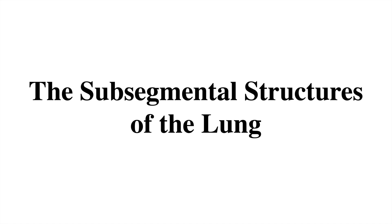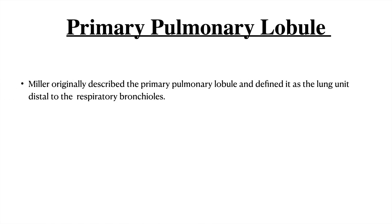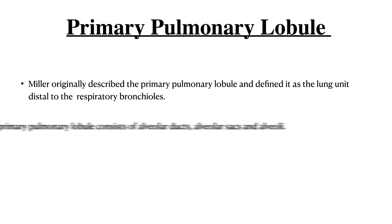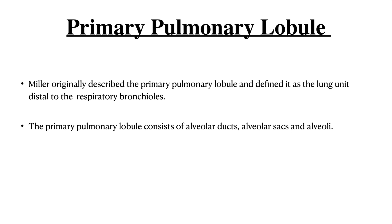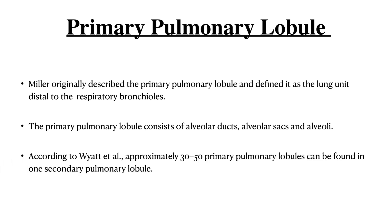Coming to the sub-segmental structure of the lungs — this is very important as this is where we need to find the disease process. The lung basically has three sub-segmental portions. The first is the primary pulmonary lobule, defined by Miller as the lung unit distal to the respiratory bronchioles. It consists of alveolar ducts, alveolar sacs, and alveoli, but it is too small and not visible in a CT scan as a separate unit. Approximately 30 to 50 primary pulmonary lobules can be found in one secondary pulmonary lobule.